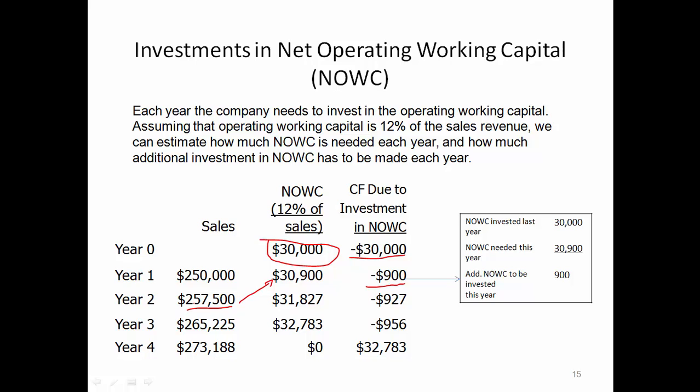Same with year three. At the end of year two, we look at year three, and year three's revenue is estimated to be this much. 12% of that would be $31,827. And from year two, we can recover a total of $30,900. So the difference between these two numbers is how much we have to invest as an additional investment in NOWC — that is negative $927.